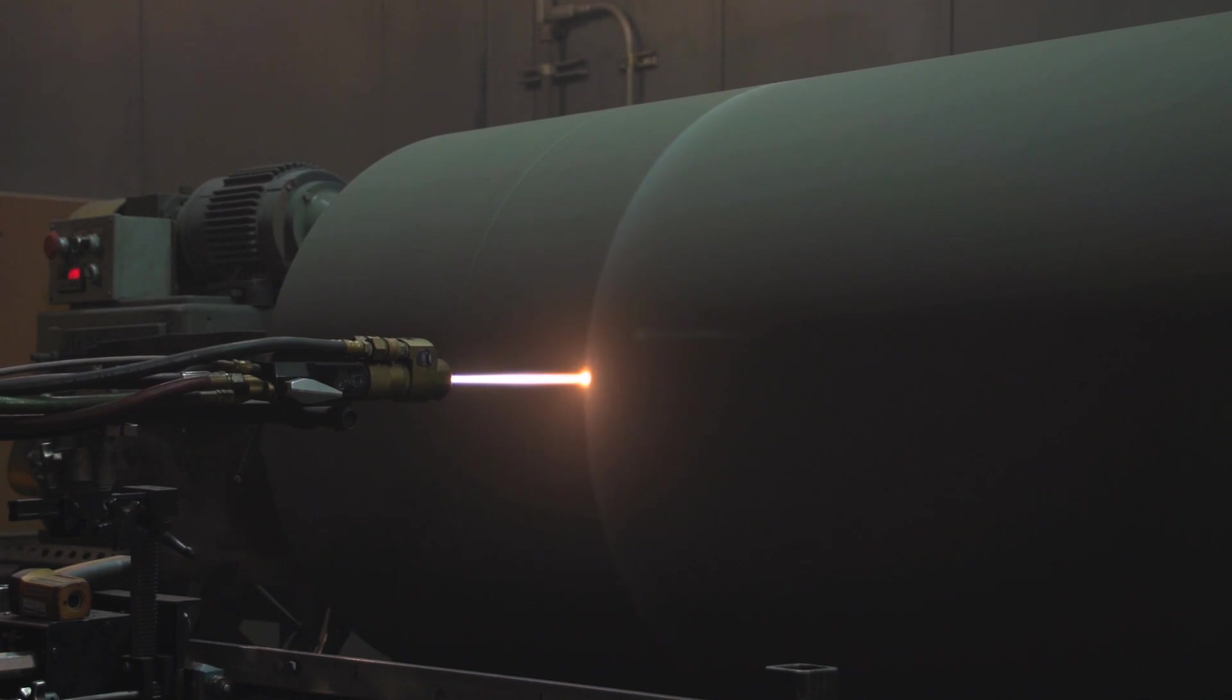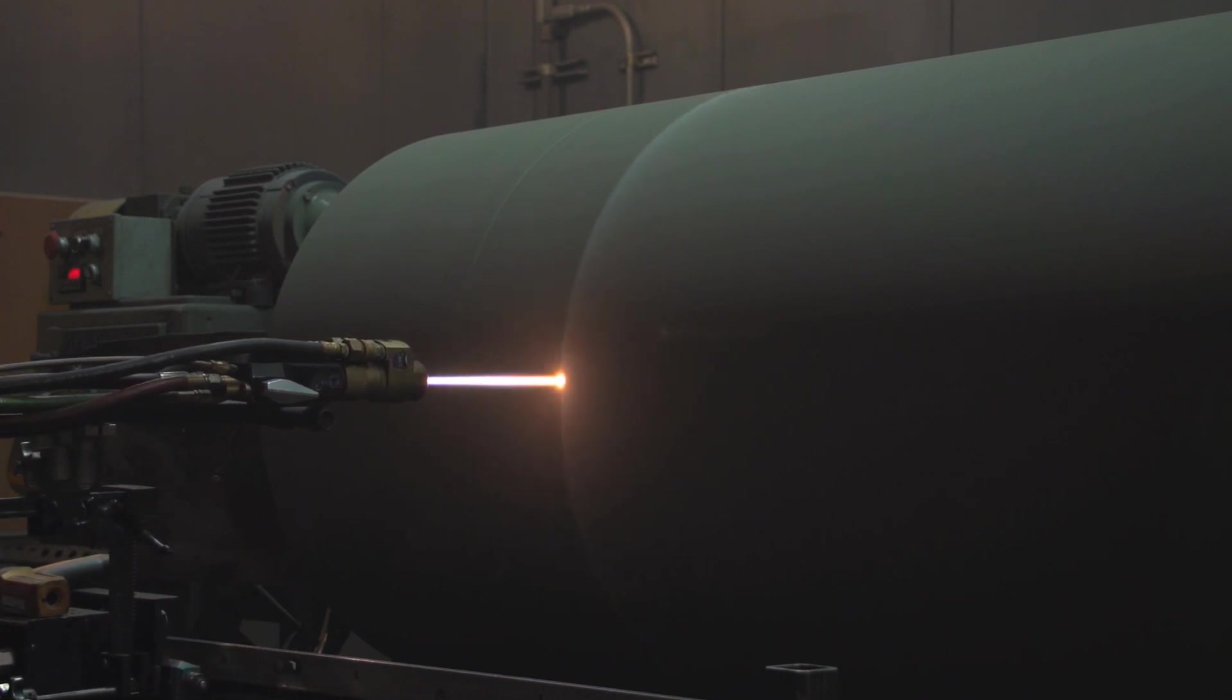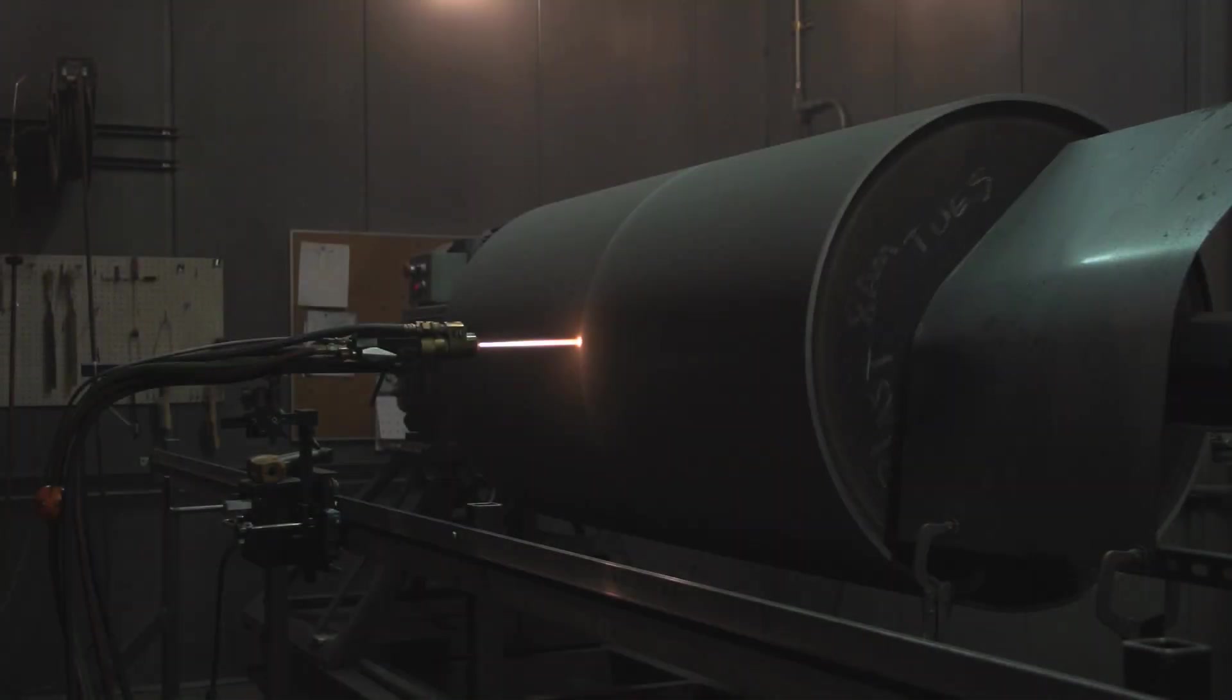From there, the HVOF takes over, applying material layer after layer until the coating reaches its prescribed thickness. When this process is completed, the strength and durability of the newly coated roll will have increased significantly over one that was treated using traditional methods.